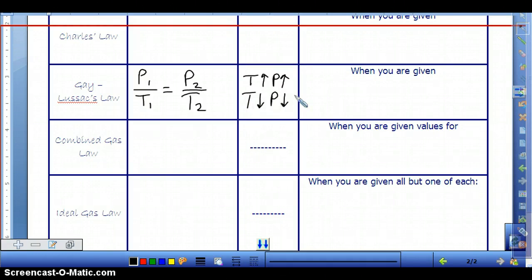And you would use Gay-Lussac's Law when you're given pressure. And so you can write the same units that you wrote before. You could have atmospheres, you could have millimeters of mercury, kilopascals, or torr. And then temperature. This law also has to be in Kelvin.